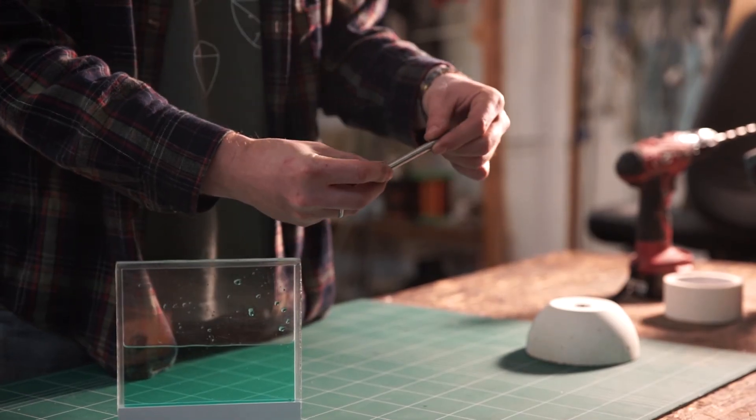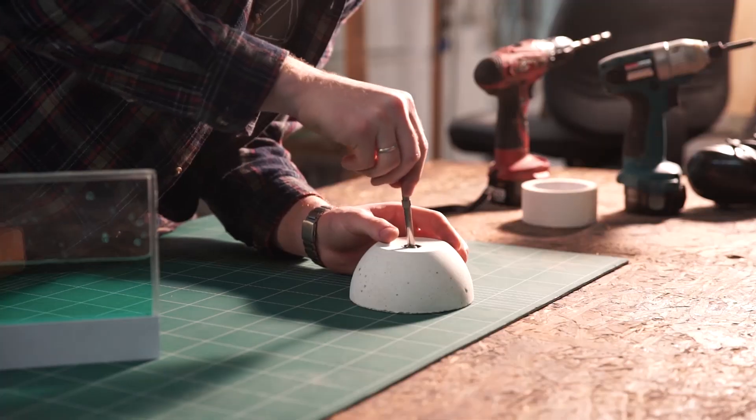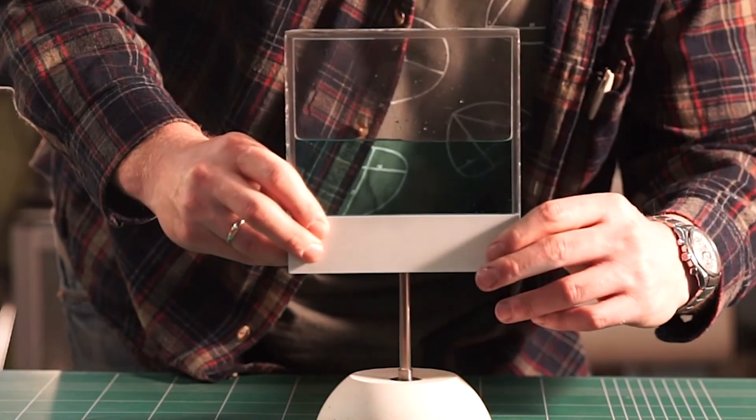Then I slipped a small piece of tube on the shaft to act as a stopper. Now I can finally place the tank on top and give it a spin.